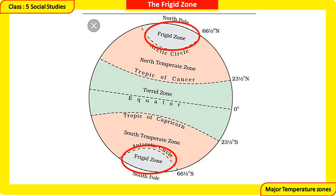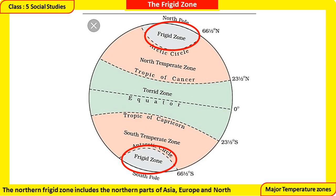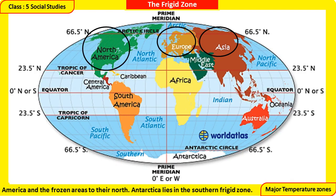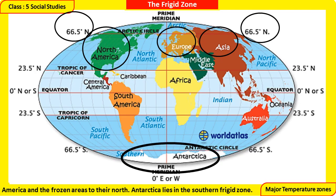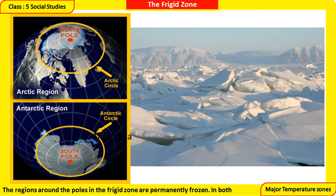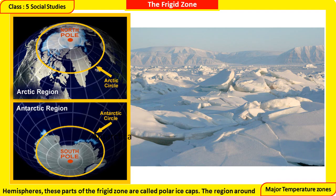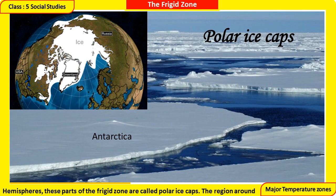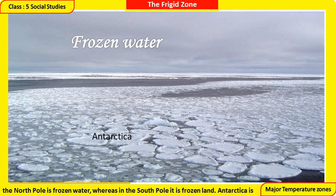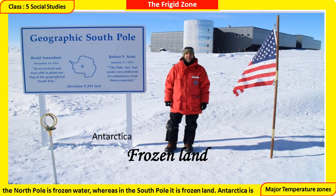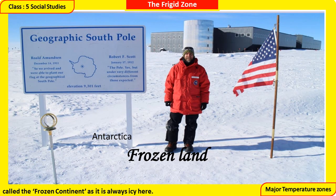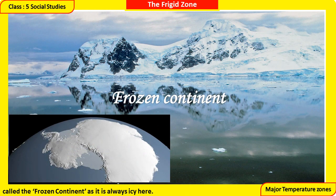The Frigid Zone: the Northern Frigid Zone includes the northern parts of Asia, Europe, and North America, and the frozen areas to their north. Antarctica lies in the Southern Frigid Zone. The regions around the poles are permanently frozen and in both hemispheres these are called polar ice caps. The region around the North Pole is frozen water, whereas at the South Pole it is frozen land. Antarctica is called the frozen continent, as it is always icy here.